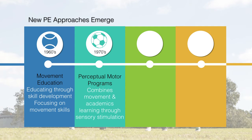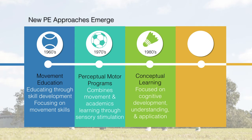About ten years later, the focus shifted to what we call perceptual motor programs. This is where academic subjects were incorporated into physical education — combining math, sciences, and language arts with physical activity to create a more well-rounded educational approach. Learning through sensory stimulation was huge. Now we see a combination of all these approaches, but initially these were explored a long time ago and revisited until physical education programs were found to need all of these approaches.